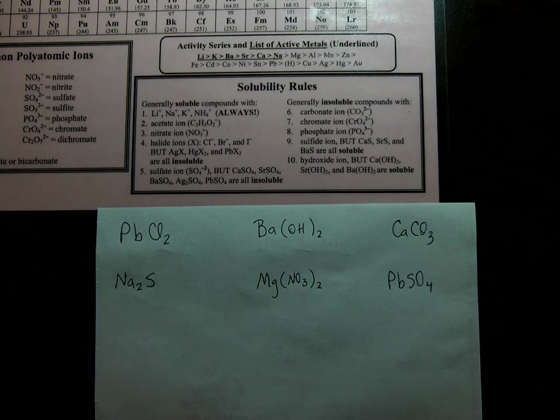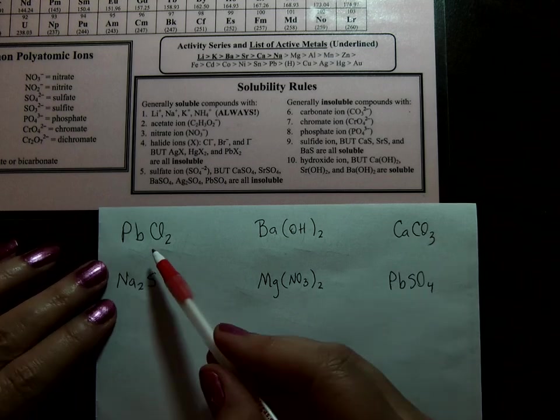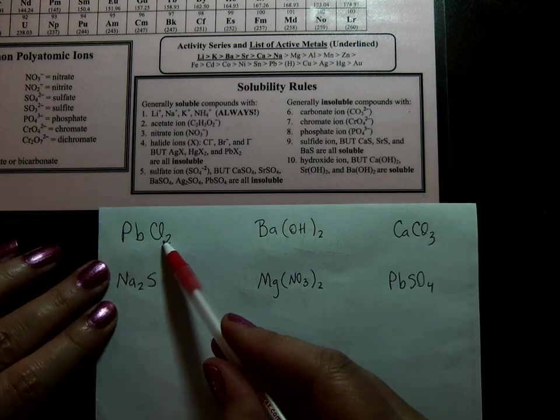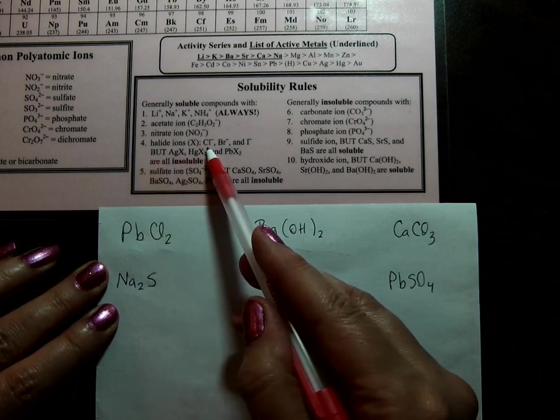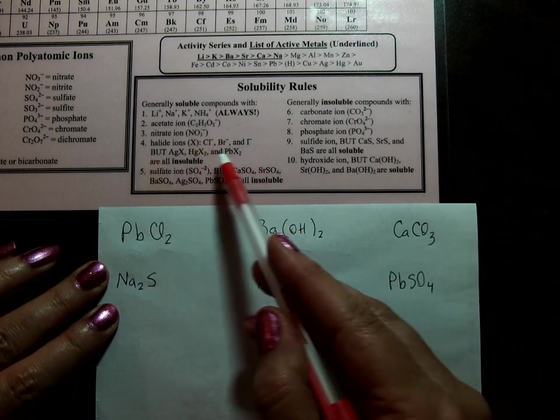Welcome back. So the first one is lead to chloride, PbCl2. We're looking for lead or chloride, whichever we come to first. Rule number 4 has Cl minus in it, which is soluble unless it's bonded to silver, mercury, or lead.